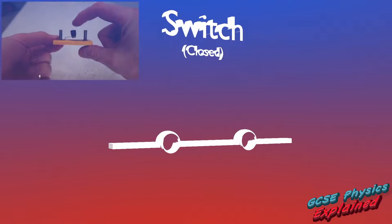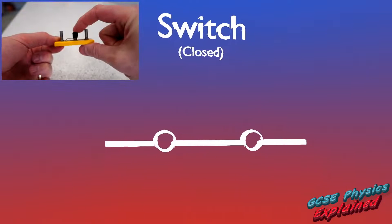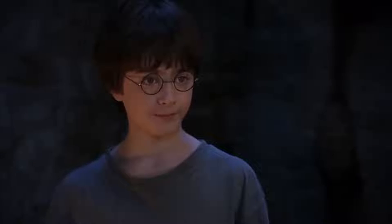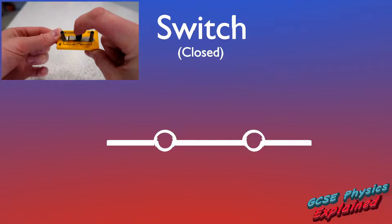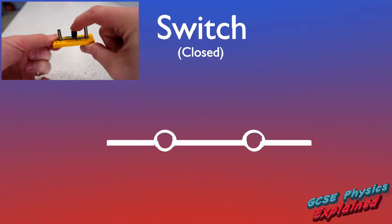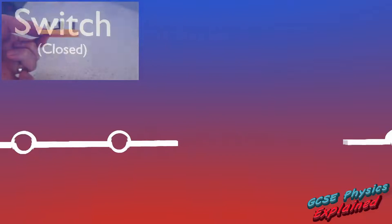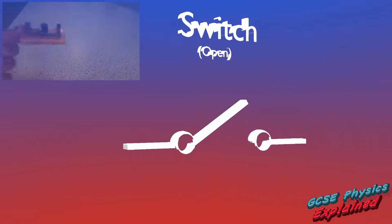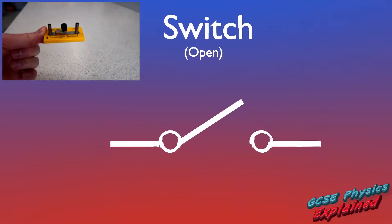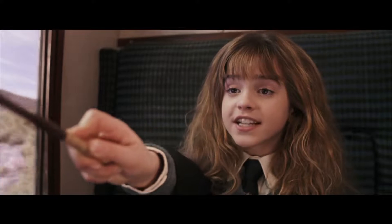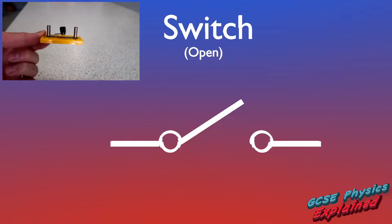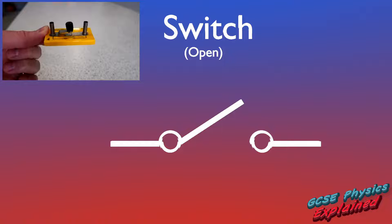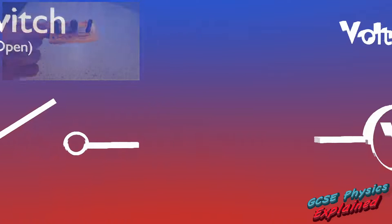The switch. A closed switch allows an electrical current to flow. An open switch stops electrical current from flowing.